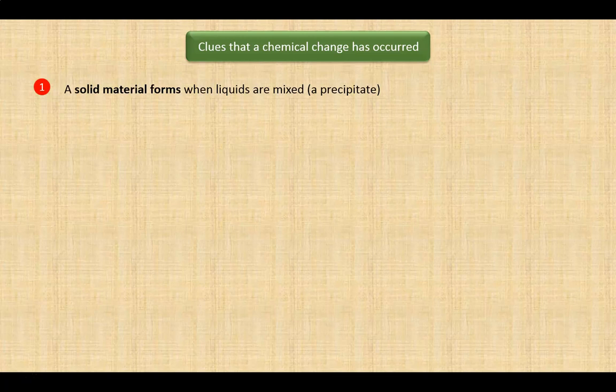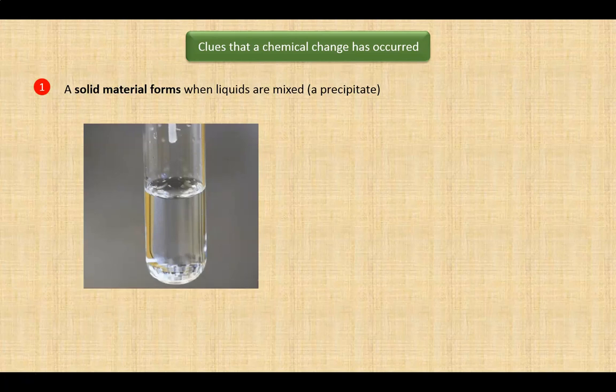If a solid material forms when liquids are mixed, this generally indicates that a chemical change has occurred. Such a solid is called in chemistry a precipitate. This clip shows the formation of a beautiful yellow precipitate you saw earlier called lead iodide.